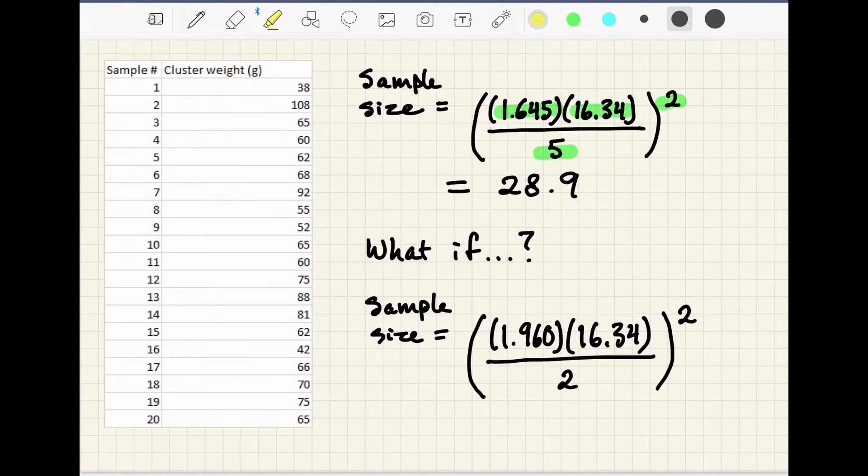But let's look at what would happen if we wanted a higher confidence interval of 95% instead of 90%, which would make our z-score 1.960 instead of 1.645. And maybe our margin of error is tighter too, so we only want to allow an error of plus or minus 2 grams for our average cluster weight. If we do that calculation, now we need 256.4 cluster samples. You can also see that if we had more variation in our initial sample weights, that would make our standard deviation higher. And a higher standard deviation would mean we needed a larger sample size to capture that variability.